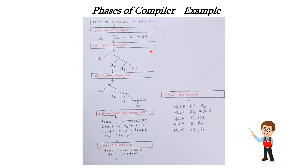These tokens are fed into the syntax analyzer, which generates the parse tree as the output. The parse tree is shown here. The left hand side of the expression is ID1 with the assignment operator, and the right hand side has ID3 multiplied by 50, with that result added to ID2, all assigned to ID1. This parse tree is fed into the semantic analyzer, which generates the annotated parse tree or annotated syntax tree. Since all variables are real variables, it performs type conversion, converting the integer 50 to real. This is the modified parse tree.